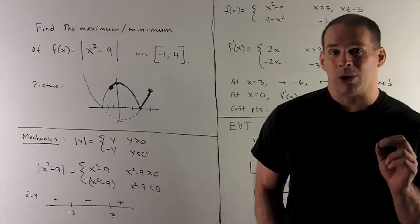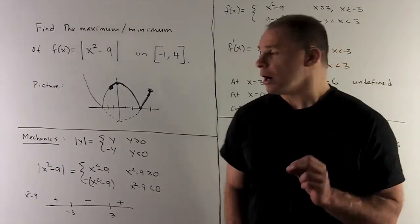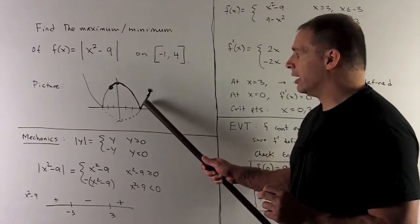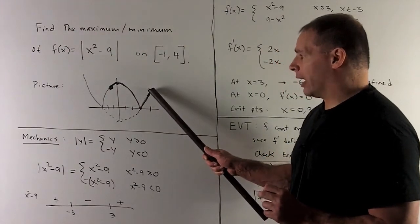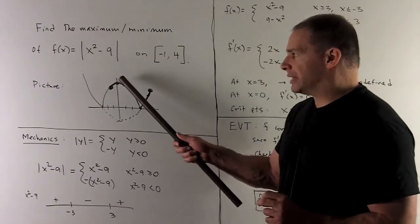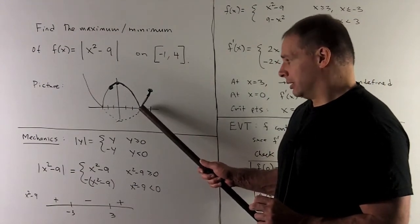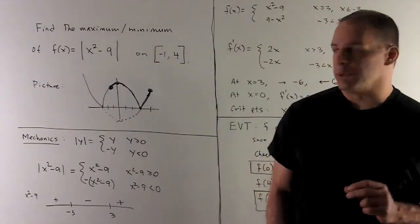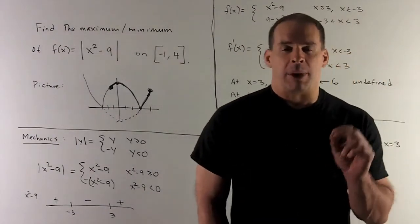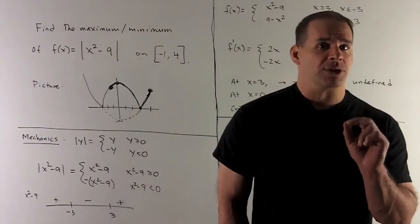The interval we're interested in goes from -1 to 4, so we only care about what's happening in that range. From the graph, our maximum is going to be at x = 0 and our minimum is going to be at x = 3 with value equal to zero.